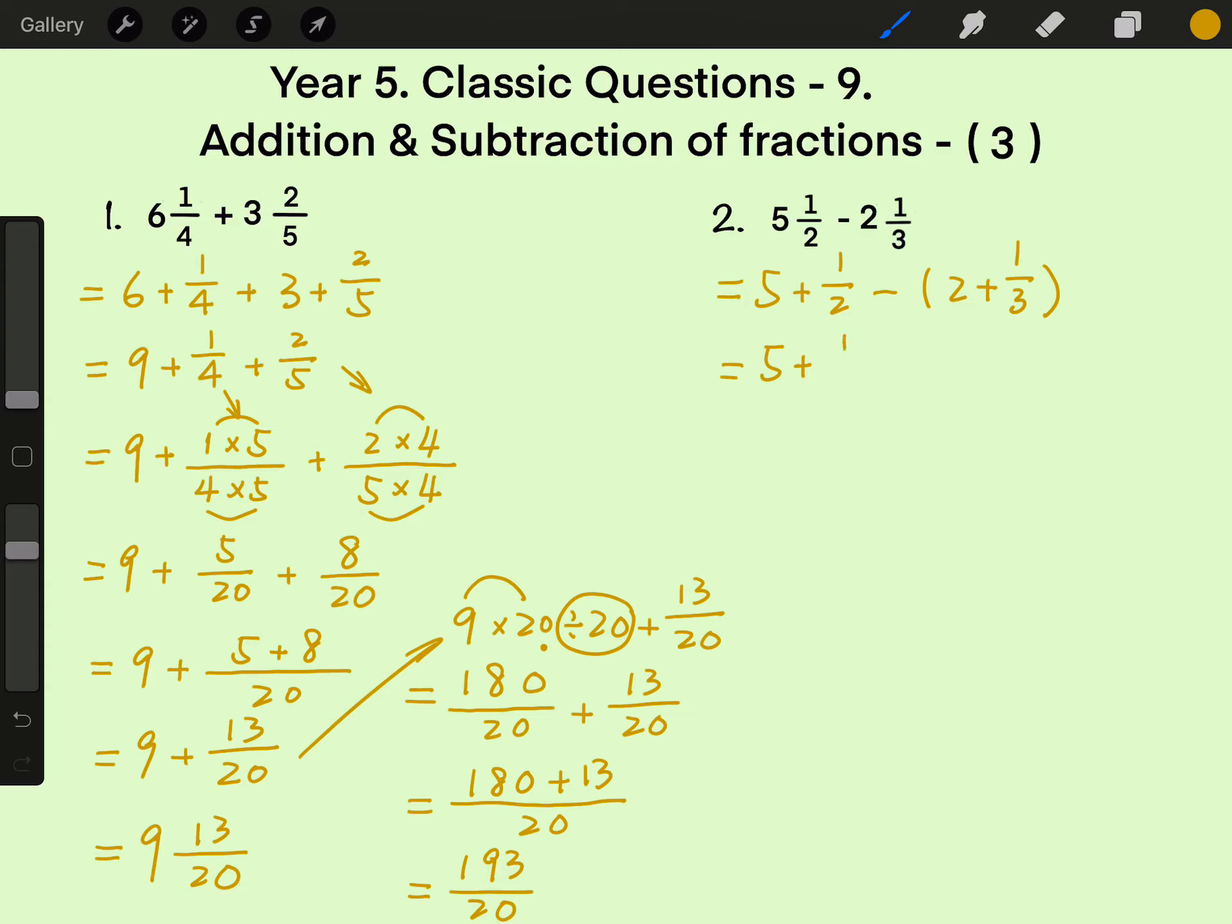5 plus 1 half minus 2 minus 1 third. 5 minus 2 is 3, and then plus 1 half minus 1 third.